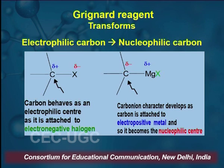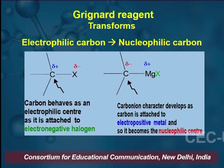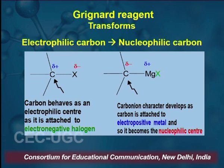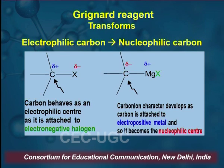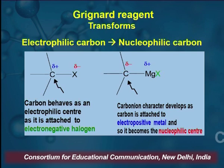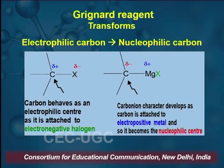The key aspect of Grignard Reagent is that an electrophilic carbon gets transformed to a nucleophilic carbon. As we are seeing on the screen, carbon behaves as an electrophilic center as it is attached to an electronegative atom — that is the halogen — and it carries a delta positive charge. But when magnesium is inserted between them, this becomes negatively charged, changing it to a nucleophilic carbon.